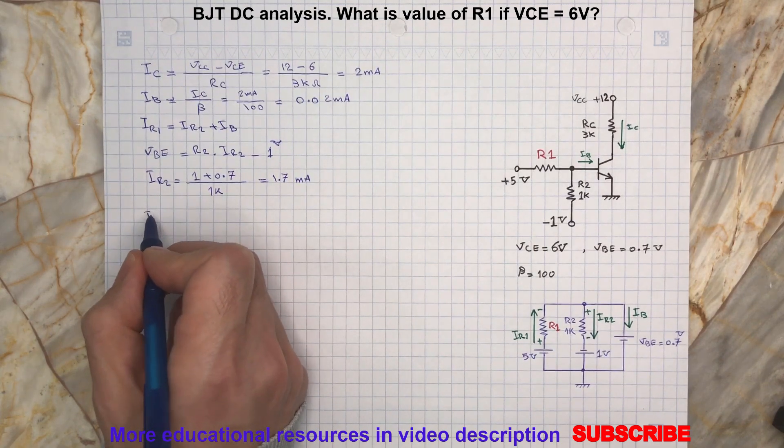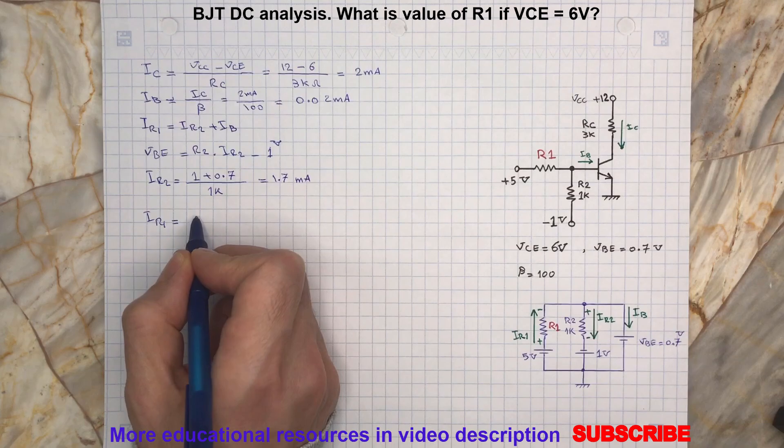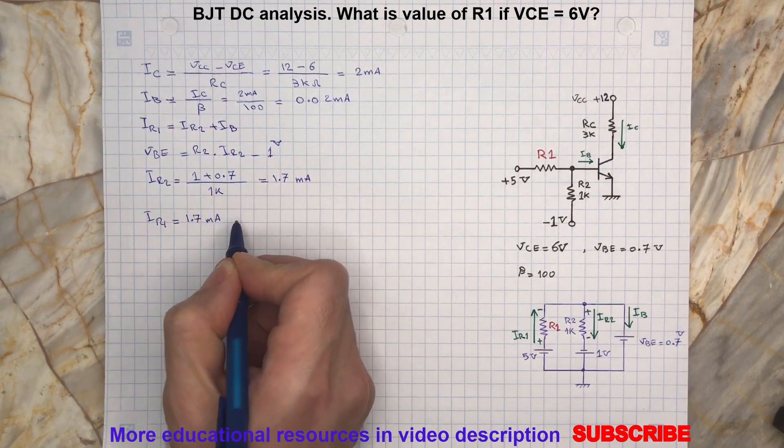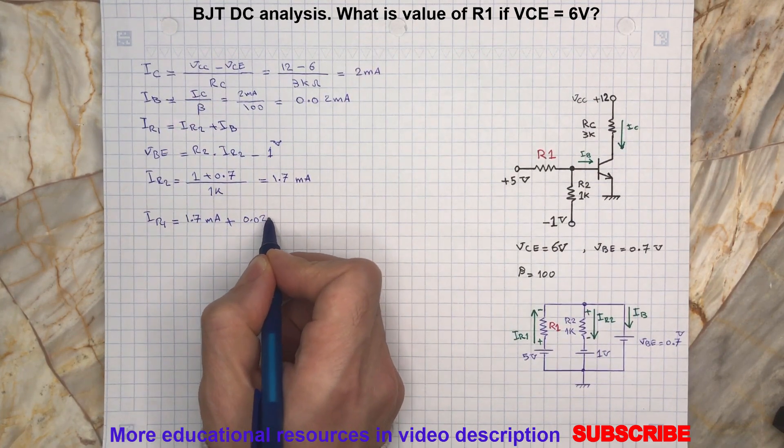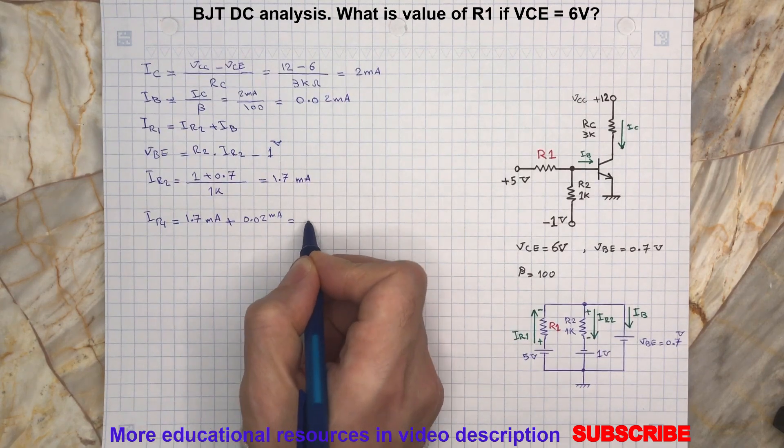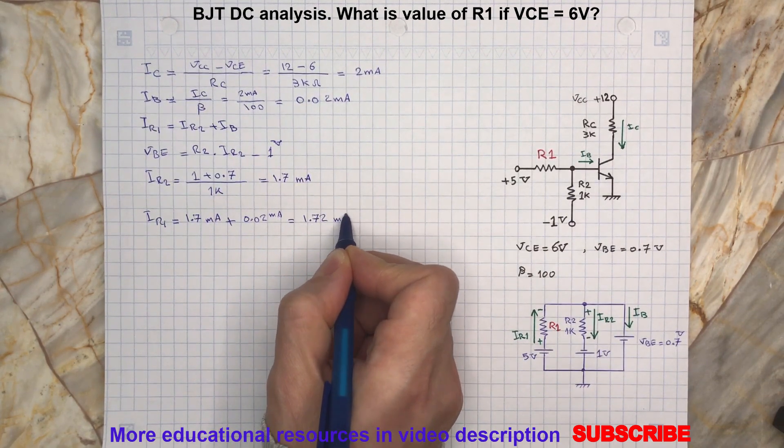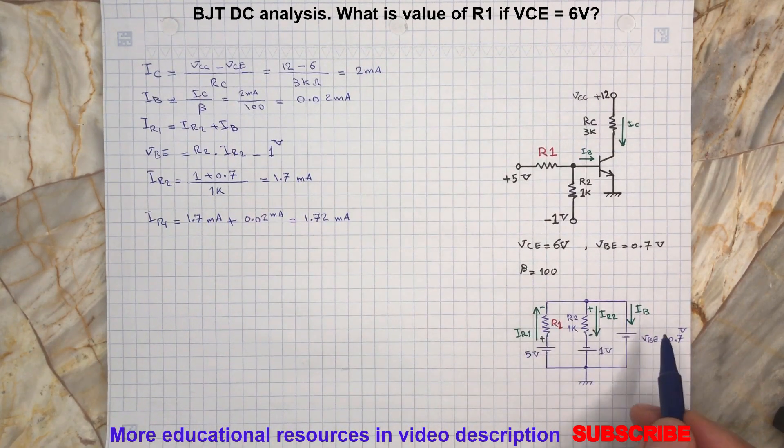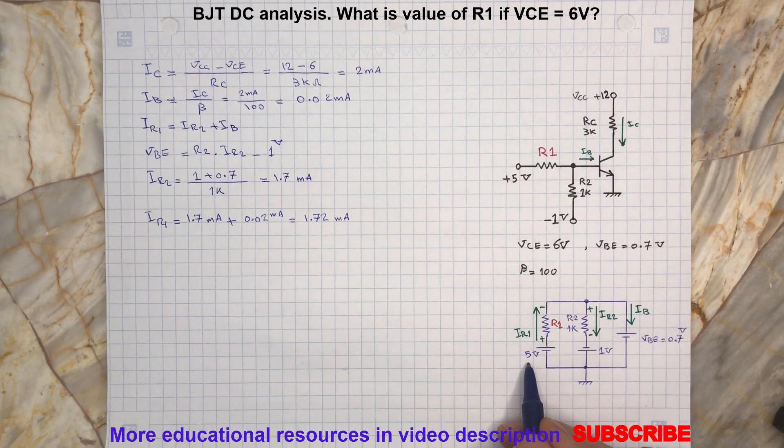So now we can write the same expression here. Now we know the current, we also know the voltage at this point, which is VBE, and now we know the voltage at this location, which is 5V.